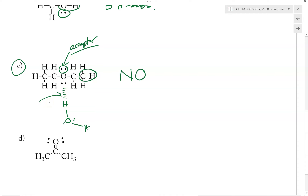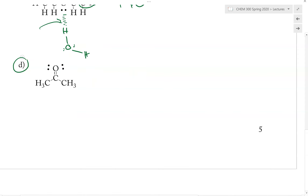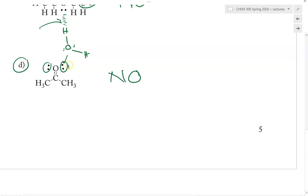How about example D: will this molecule be able to make H-bond to itself? The answer is no — it only has two donors but no acceptor. Therefore, it will not be able to form H-bond among itself. But similarly, can this make H-bond to water? The answer is yes, because water has the acceptor which can make H-bond to the H-bond donor from this molecule.